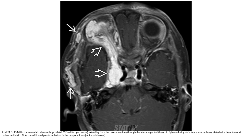T1 with contrast fat-saturated imaging in the same child shows a large orbital plexiform neurofibromatosis extending from the cavernous sinus through the lateral aspect of the orbit and sphenoid wing, demonstrating the variability associated with this tumor in patients with neurofibromatosis type 1, with an additional plexiform region in the temporal fossa.